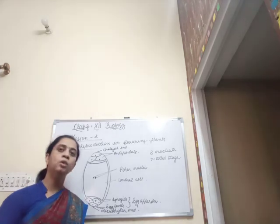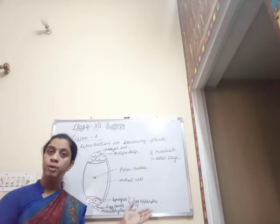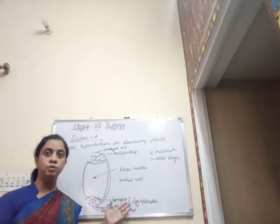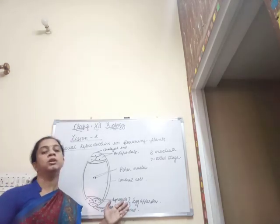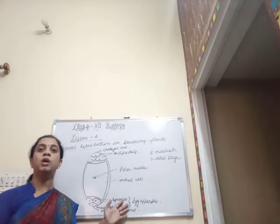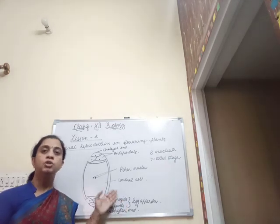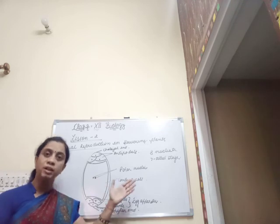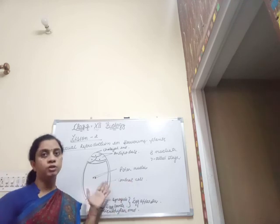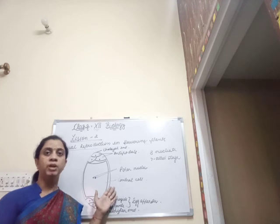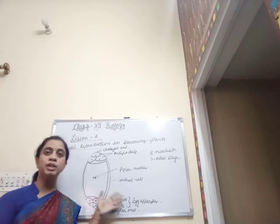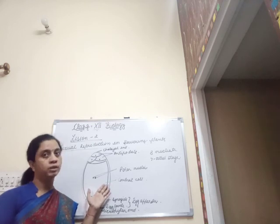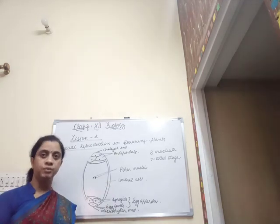We have completed the first phase — the pre-fertilization event — that is the development of the gametes, specifically the 8-nucleate 7-cell stage through monosporic development, which is essential for double fertilization in angiospermic plants. In the next class we are going to talk about the transfer of gametes, as the gametes need to be transferred towards one another for fusion to take place. Thank you.